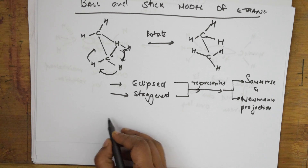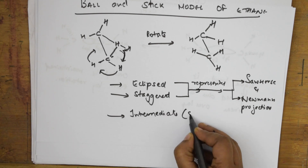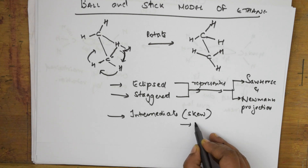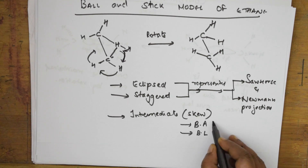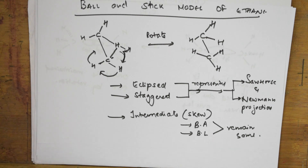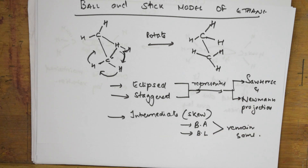There is also one intermediate form of conformation called the skew conformation. For this intermediate form, an important thing to remember is that bond angle and bond length both remain the same. In my next video, I'll be teaching you the sawhorse and Newman projections and also the skew intermediate conformation of ethane. Thank you for watching — stay tuned and stay connected.